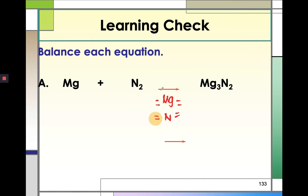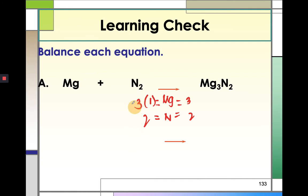We find out the number of each element present. In the product side, there are three magnesium atoms; in the reactant side, there is only one. For nitrogen, there are two atoms in the reactant side, and two nitrogen atoms in the product side — so nitrogen is already balanced. We only need to balance magnesium. We place a coefficient of 3 before magnesium, giving us three magnesium atoms. The balanced equation is: 3Mg + N2 → Mg3N2.